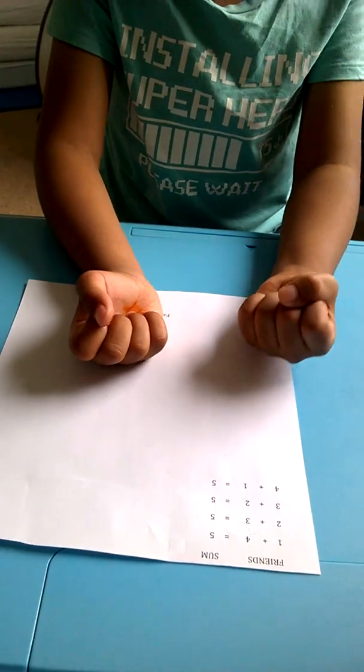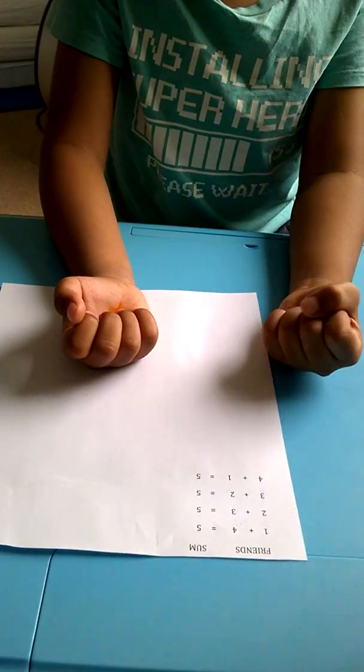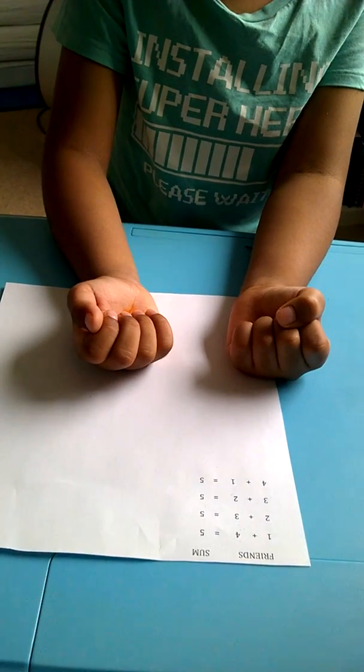The thing to remember is that we never touch the closed fingers to subtract the friend. Only use open fingers.